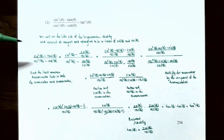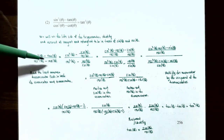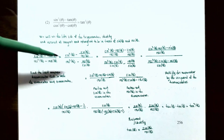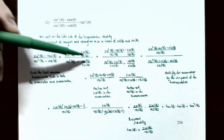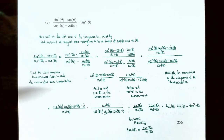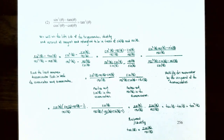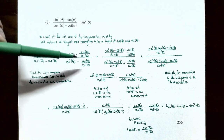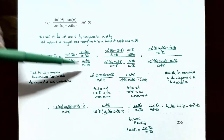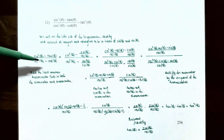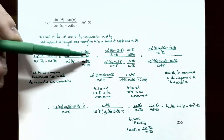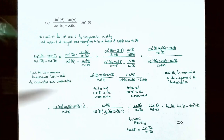Starting with the left side: sin²θ − tan θ divided by cos²θ − cot θ. Keep sin²θ the same, but rewrite tan θ as sin θ / cos θ — that becomes a fraction in the numerator of the larger fraction. In the denominator, cos²θ stays the same, and cot θ is rewritten as cos θ / sin θ, which becomes a fraction in the denominator of the larger fraction. Now we have work to do in both the numerator and the denominator.